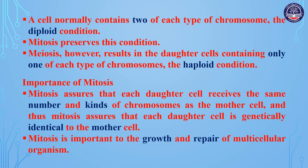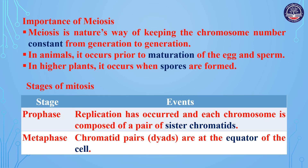Mitosis is important to the growth and repair of multicellular organisms. Meiosis is nature's way of keeping the chromosome number constant from generation to generation.